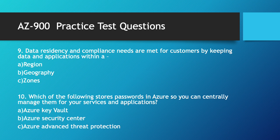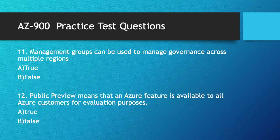Next question: which of the following stores passwords in Azure so you can centrally manage them for your services and applications? The correct answer is Azure Key Vault. Azure Key Vault allows you to store secrets and passwords for various Azure services and applications. B and C are not correct. Azure Security Center is used to monitor various security alerts and metrics. Next question: management groups can be used to manage governance across multiple regions — that is not correct. Management groups are used to manage various subscriptions under them. In the hierarchy, management groups sit at the top level with various subscriptions managed under them. The correct answer is B.